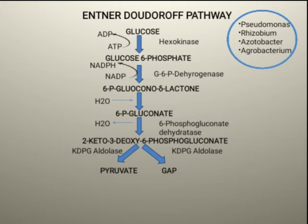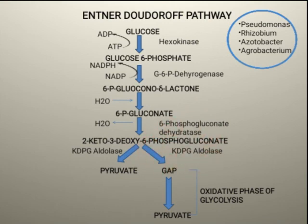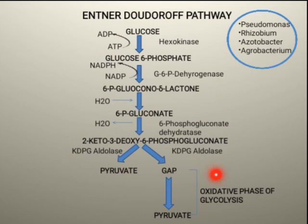The glyceraldehyde-3-phosphate then enters the oxidative phase of glycolysis, and in the end we again get pyruvate. So the EDP pathway shares this step with glycolysis. Overall, from the EDP pathway we get two pyruvates, one NADPH, and one NADH. The net ATP production in the case of the EDP pathway is one ATP, because one ATP is consumed in the first step.